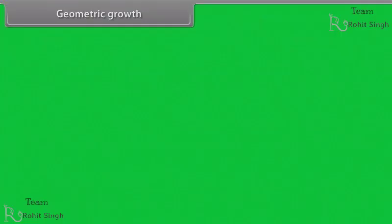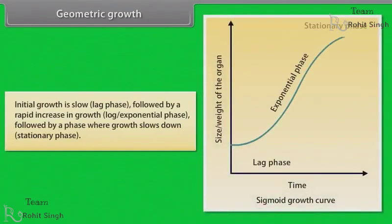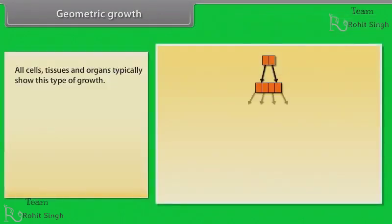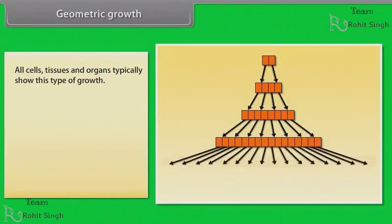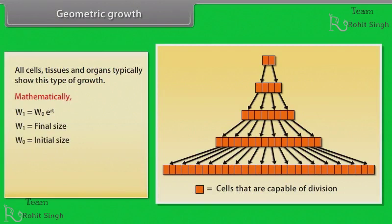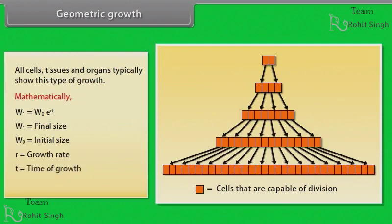In geometric growth, initial growth is slow, followed by a rapid increase in growth, followed by a phase where growth slows down. All cells, tissues and organs typically show this type of growth. Mathematically, W1 = W0 × e^(Rt), where W1 is the final size, W0 is the initial size, R is the growth rate, T is the time of growth, and e is the base of natural logarithms.